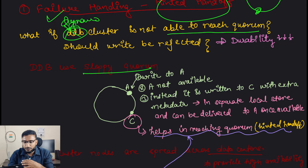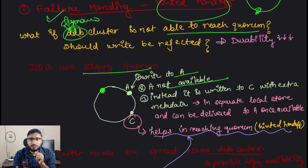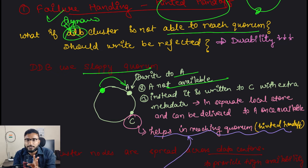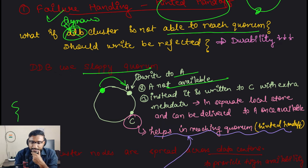Let's take an example. You have Node A and Node C, and the write request came to Node A acting as the coordinator node. But this node is not available, so it can't write. It could also be that another node was the coordinator and the write request was forwarded to Node A - and Node A is essential for reaching quorum. If it is also down, we cannot reach quorum. So instead of writing to A, you will temporarily write to some other node.